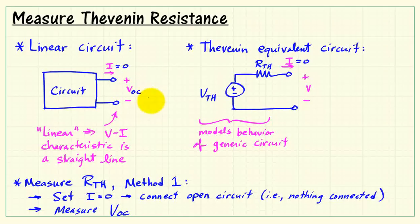Measure the open circuit voltage called VOC with a digital multimeter. Since the current is zero, we have zero drop across the Thevenin resistance, and the Thevenin voltage appears directly at the output terminals. So the open circuit voltage equals the Thevenin voltage.